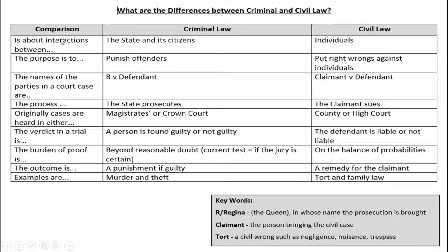This table shows the main differences between criminal and civil law. In criminal law, the interactions are between the state and its citizens — the UK, the country itself. Whereas in civil law, the interactions are between two or more individuals. In criminal law, the purpose is to punish offenders who have done wrong. In civil law, the purpose is to put right wrongs against individuals — to repair any wrongs that exist between individuals.